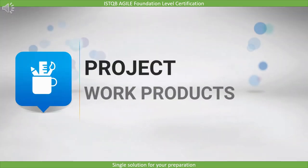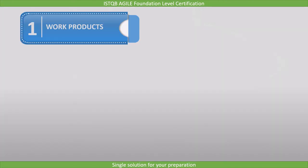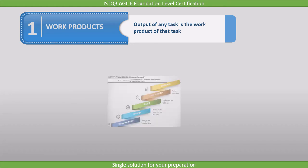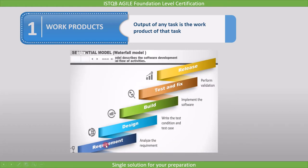In this lecture, we will cover project work products. Let's first understand what a work product is. The output of any task is the work product of that task. For example, if you are in the requirement stage and working on the requirement, once your work is done, the requirement is your work product.